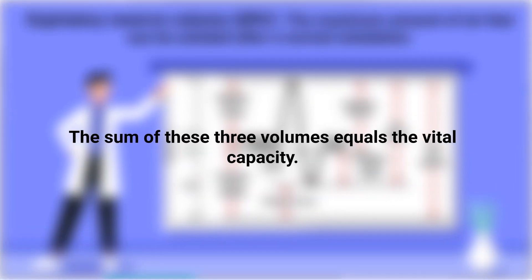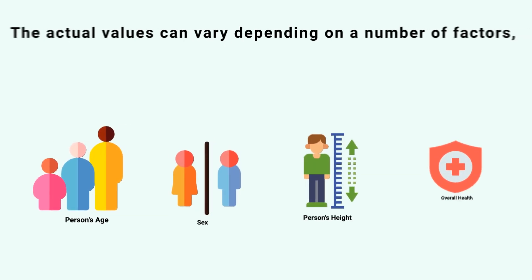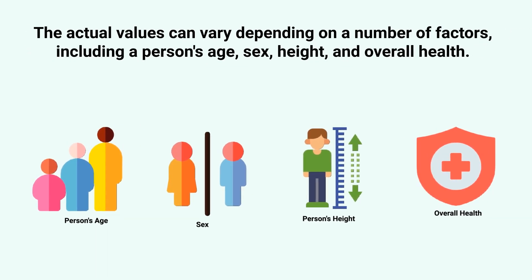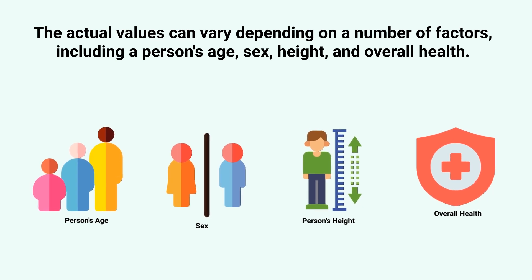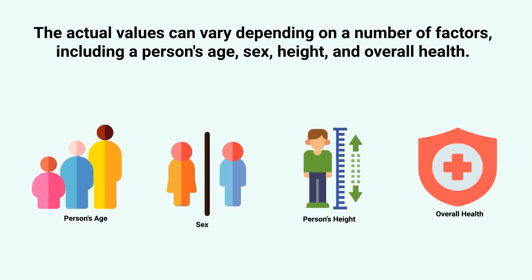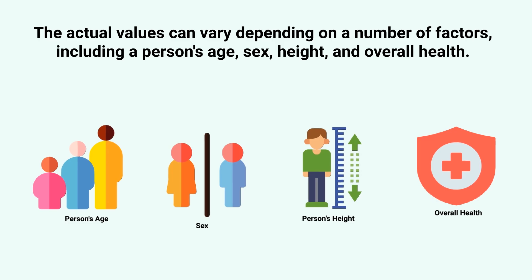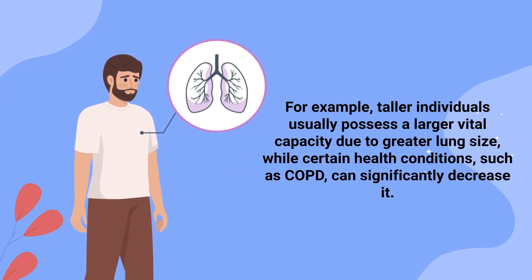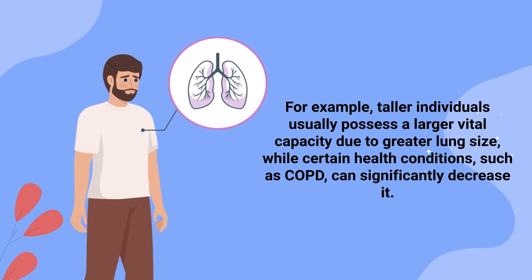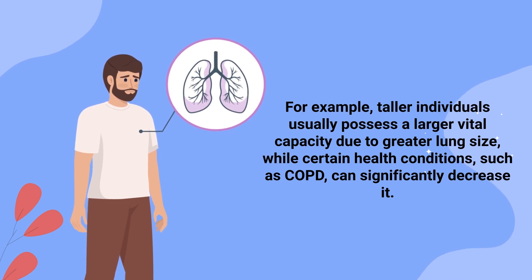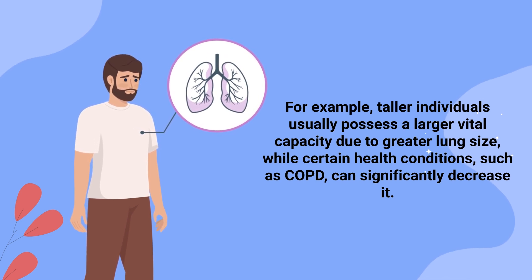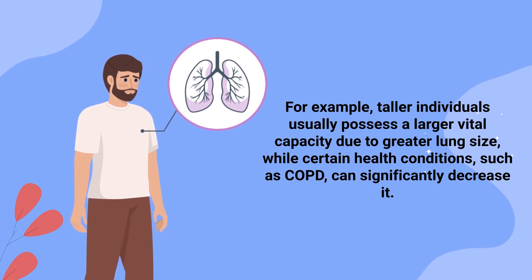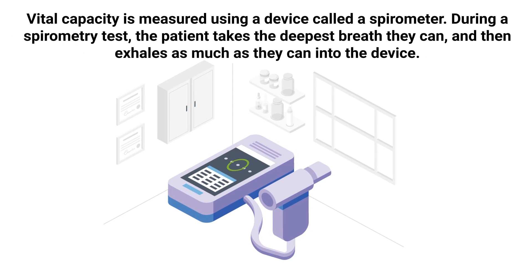The sum of these three volumes equals the vital capacity. The actual values can vary depending on a number of factors including a person's age, sex, height, and overall health. For example, taller individuals usually possess a larger vital capacity due to greater lung size, while certain health conditions such as COPD can significantly decrease this value.